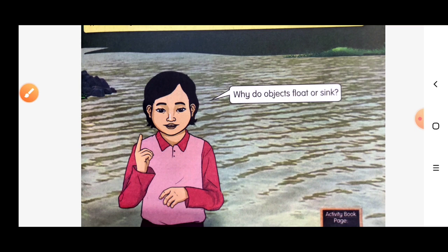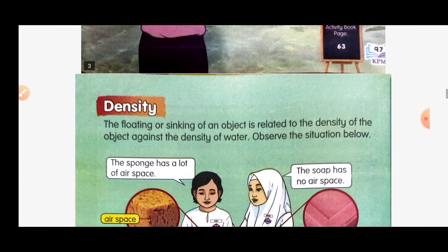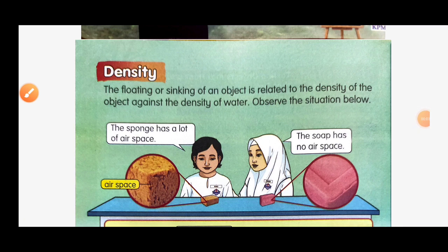Why do objects float or sink? To answer this question, let's discuss density. The floating or sinking of an object is related to the density of the object against the density of water.